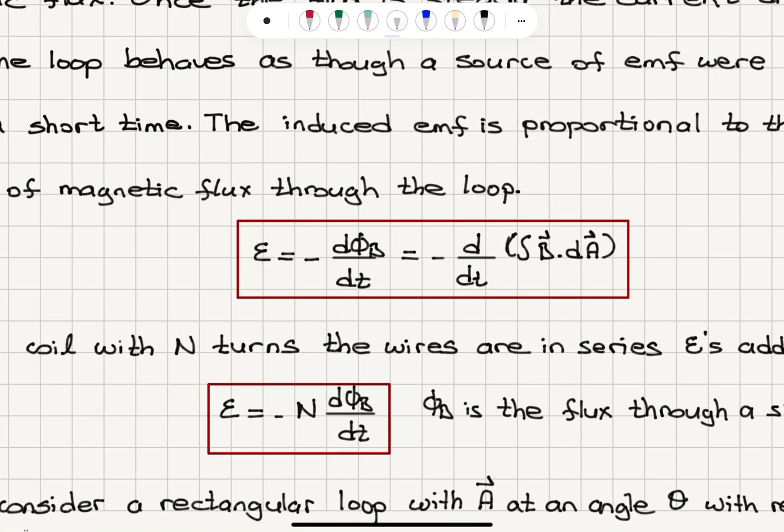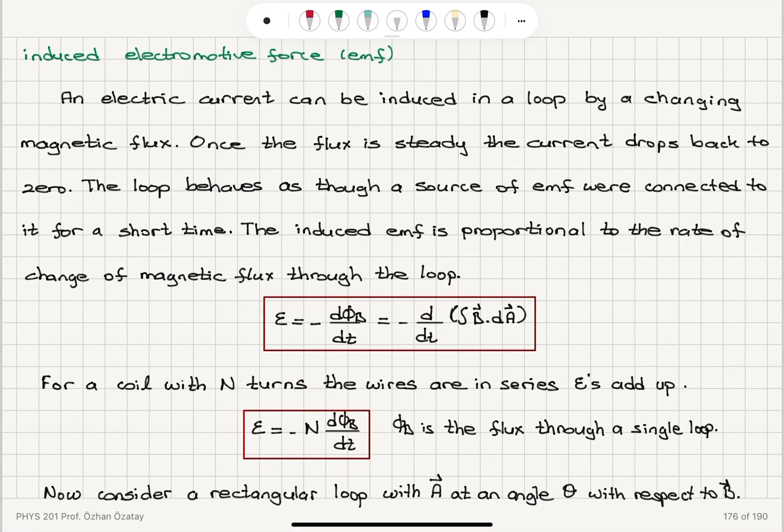We will have the induced EMF is minus the number of turns times dΦ_B/dt. Φ_B is the magnetic flux through a single loop.